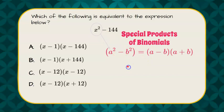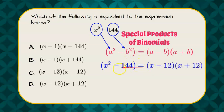The square root of x² being our first term is x, and the square root of 144 being our second is 12. So x minus 12 multiplied by x plus 12 is going to be the product.